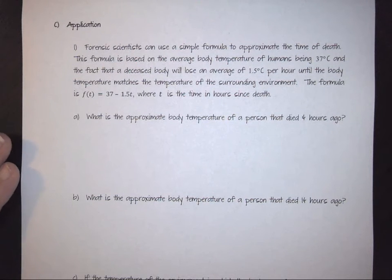Here we have that forensic scientists can use a simple formula to approximate the time of death. The formula is based on the average body temperature of a human being, 37 degrees Celsius, and the fact that a deceased body will lose an average of 1.5 degrees Celsius per hour until the body temperature matches the temperature of the surrounding environment.